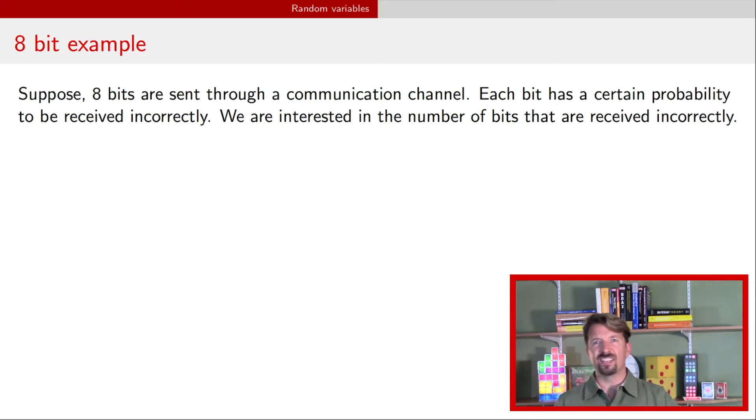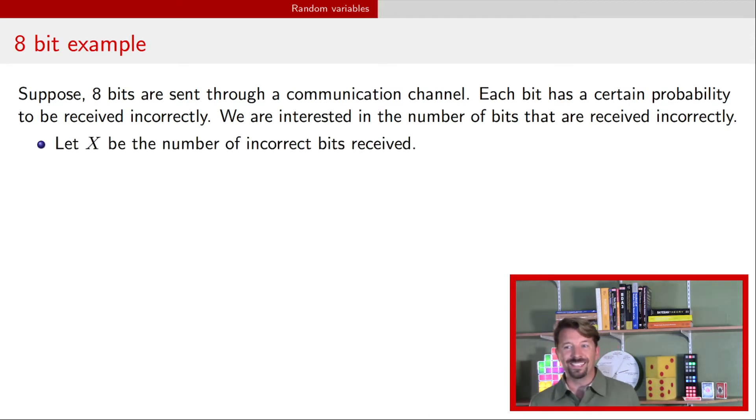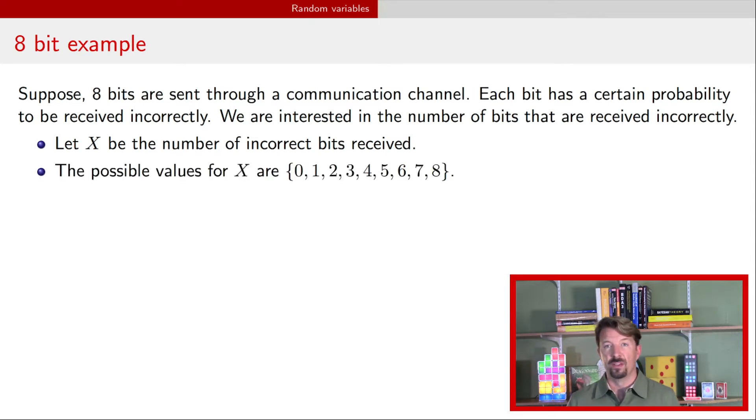Let's get into an example of an experiment and some other random variables that we might have. Let's say that we have this communication network or channel, and we're going to send eight bits down that channel. The only thing we care about is how many of those bits were incorrectly received. So I'm going to send those eight bits and then the other person at the other end of the line is going to tell me which ones were right and which ones were not right. So X here is a random variable, and it is the number of incorrect bits that were received. The possible values for X are the integers from zero to eight.